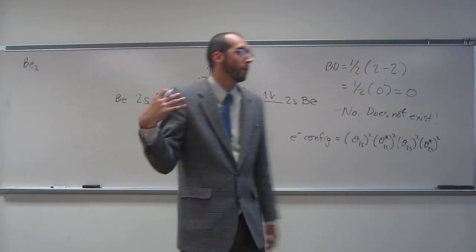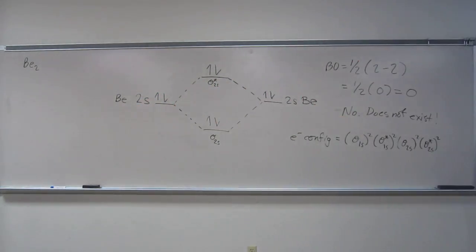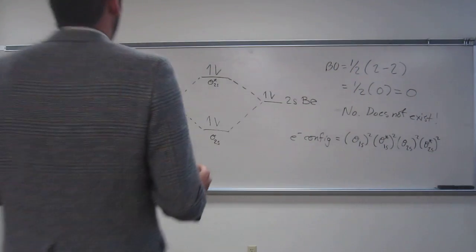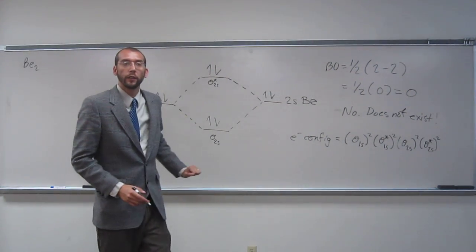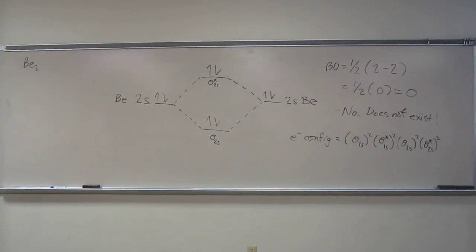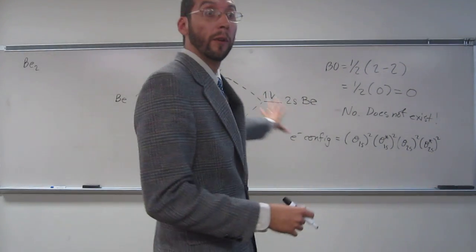And would this molecule, this theoretical molecule, if it did exist, would it be attracted to a magnet at all? No. Why not? Because there's no unpaired electrons. Yes, because you need an unpaired electron to be attracted to a magnet. And since all of our orbitals are filled completely, no magnetic attraction. So this is one of those things, paramagnetic, diamagnetic, that valence bond theory just doesn't tell us. We can only learn this using molecular orbital theory.